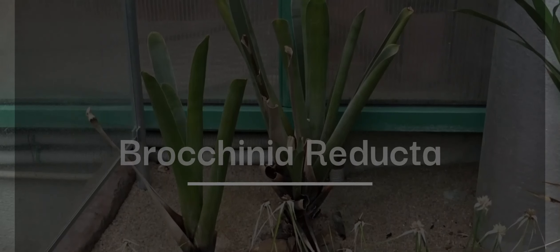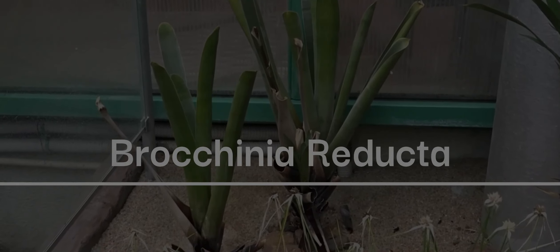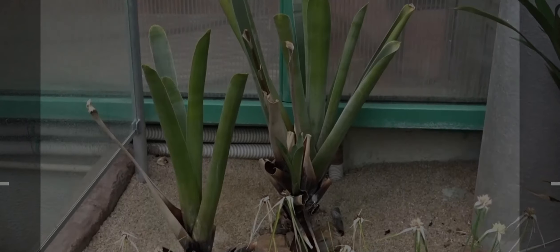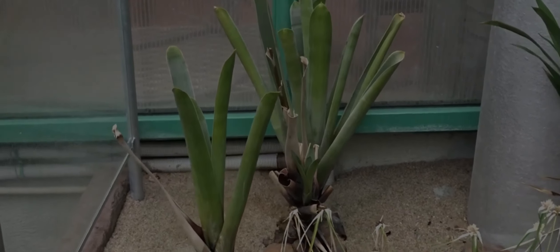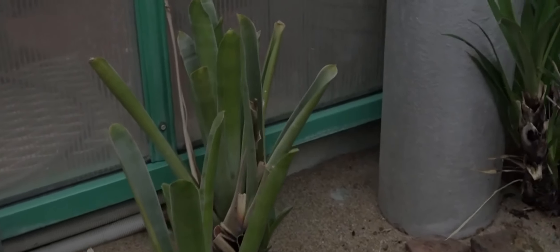8. Brochinia Reducta. This bromeliad has a rosette of spiny leaves that trap insects and other small invertebrates. It then absorbs nutrients from their decomposing bodies.